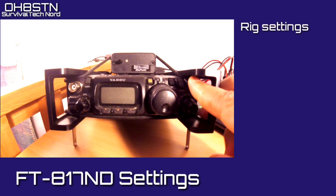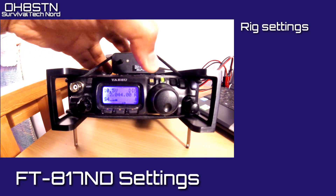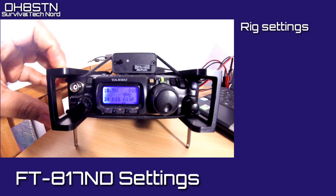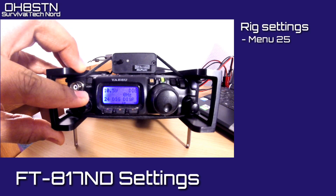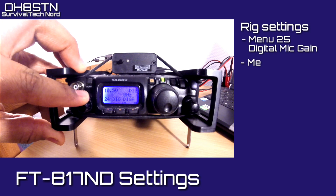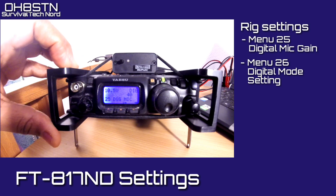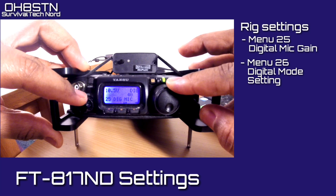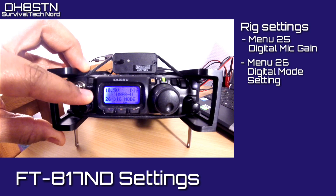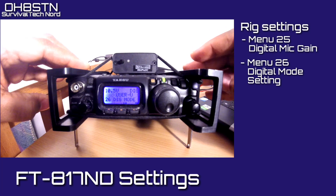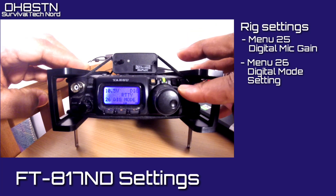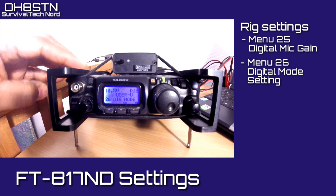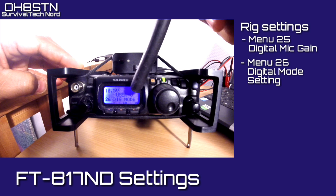The FT817 has a couple of menu settings that we need to adjust so that everything works correctly. Long press on the function button so that you can get into the menu settings. We're specifically looking for menu 25 and menu 26. Menu 25 is the digital mic gain for the data input/output on the back of your rig — I've got mine set to 40, but you may have to test to see what works for you. Menu 26 is the digital mode setting; I have mine set to User USB. Since most digital communications on amateur radio take place on upper sideband, using User USB will automatically put the radio in upper sideband when you select digital as the mode on your radio.